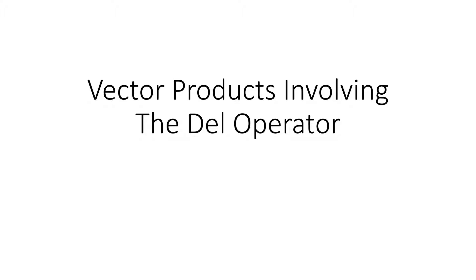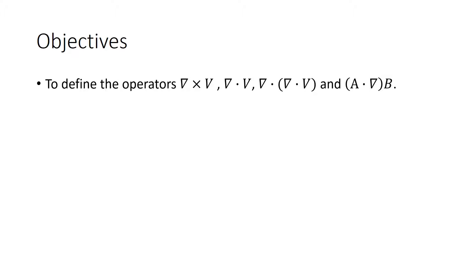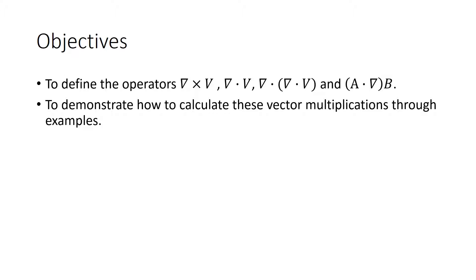Vector products involving the del operator. Our objectives for this demonstration are to define the operators del cross a vector v, del dot a vector v, del dot the quantity del dot a vector v, and the quantity of a vector a dotted with del applied to a vector b. We will demonstrate how to calculate these vector multiplications through examples.